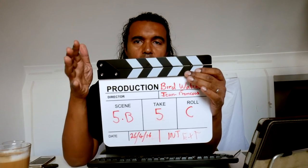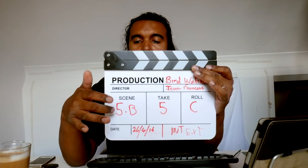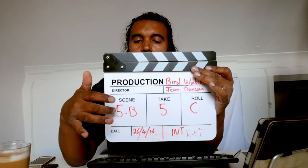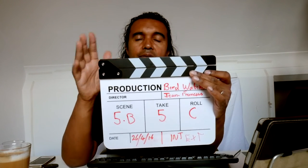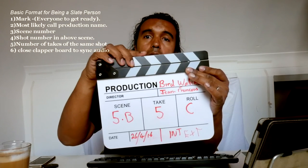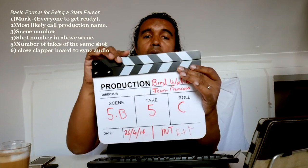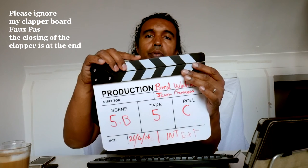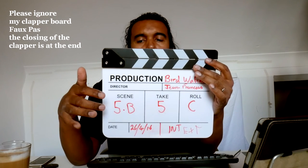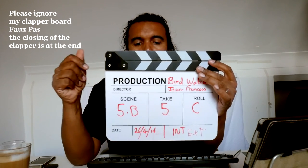So what do you say as the slate person on set? First you call out the scene, the shot, and the take. For example: 'Mark — scene 5 bravo, take 5.' You say 'mark' so everyone knows they're ready, then you clap the clapperboard. Simple as that.